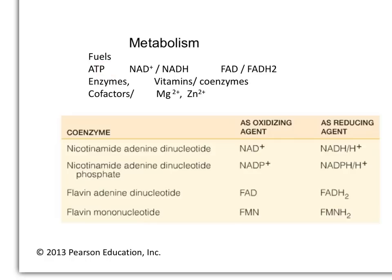Those ATP molecules, when they get hydrolyzed, will transform reactions that are endergonic into exergonic reactions. Some coenzymes, such as NAD+, FAD, FMN, and NADP+, are electron carriers. They will be taking two electrons each, producing the reduced form that can later transfer those electrons into oxidative phosphorylation, where ATP can be synthesized.